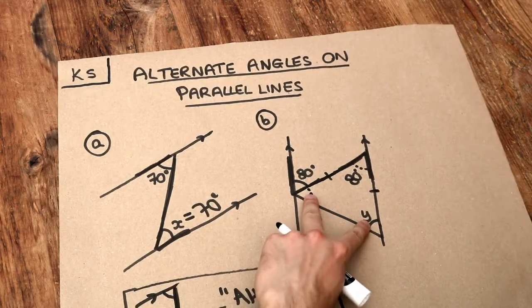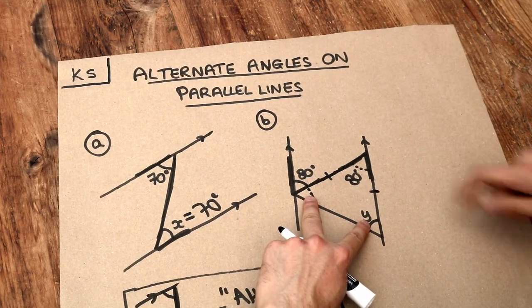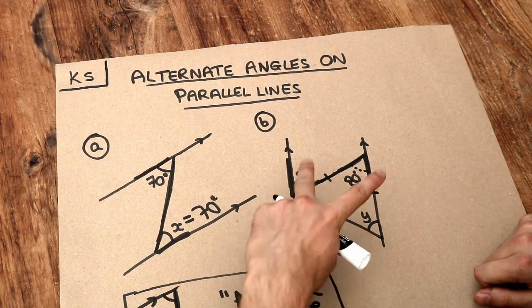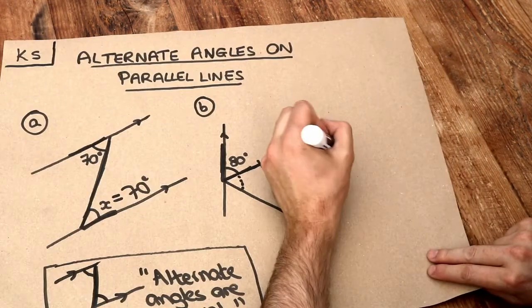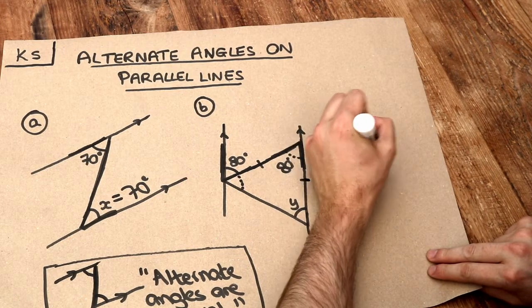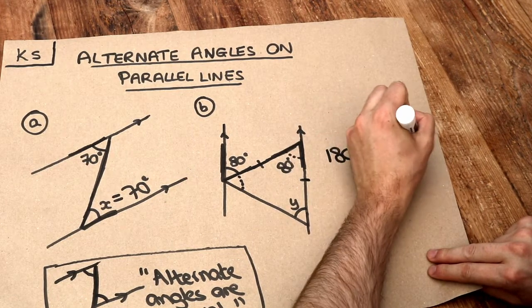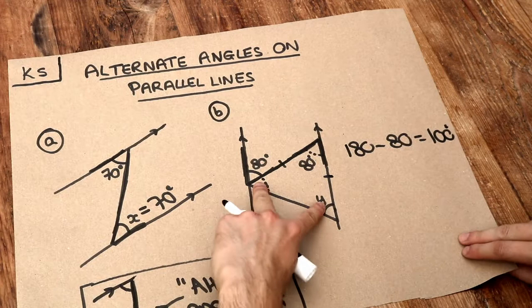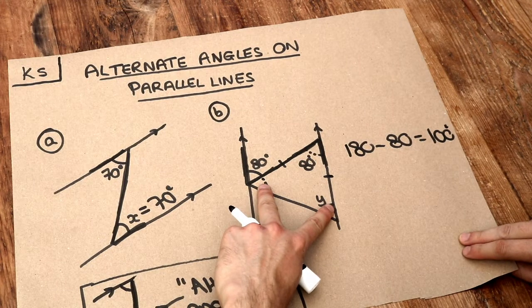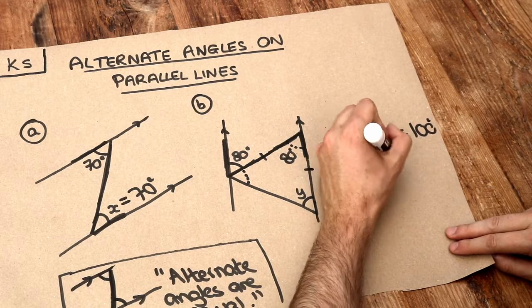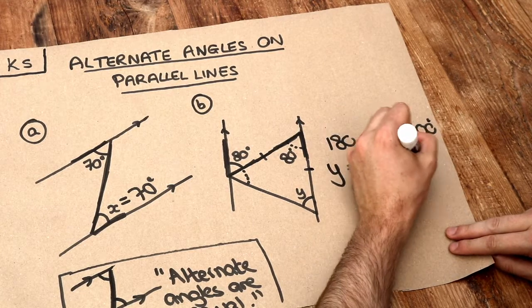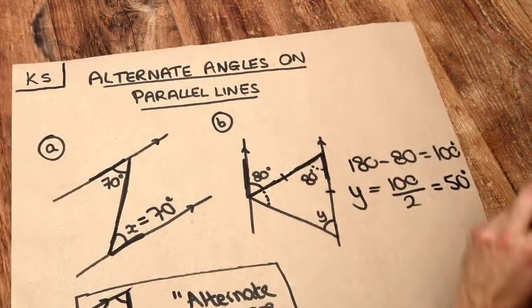So if they're the same, I should first do 180 minus that angle to find out what the total of these two angles are. And then because they're equal, I just divide by 2. So let's do that. 180 minus 80 is 100 degrees. So these two angles must add up to 100 degrees. And because they're the same, to get y, you just divide the 100 by 2. We share it equally, and that's going to be 50 degrees.